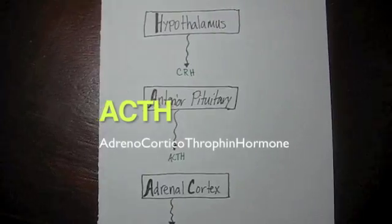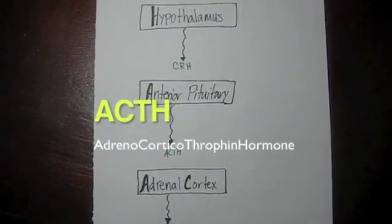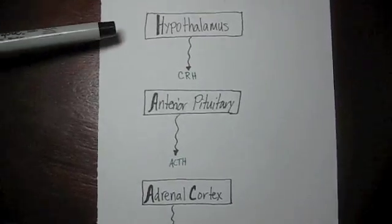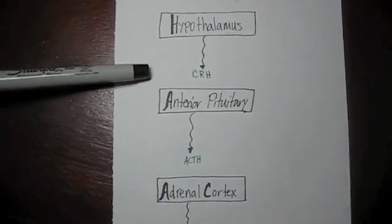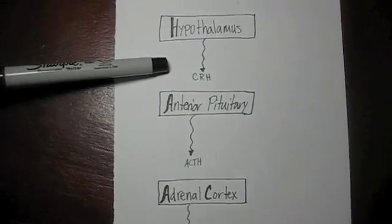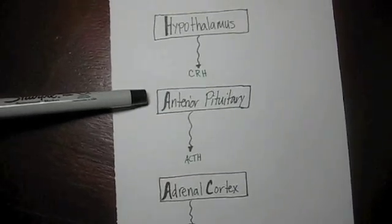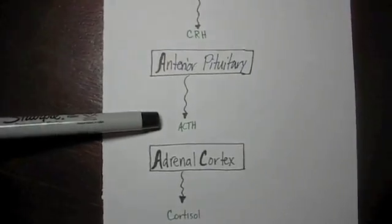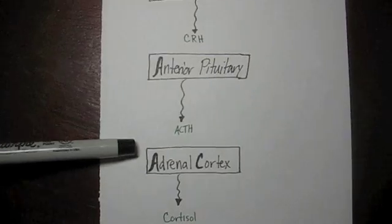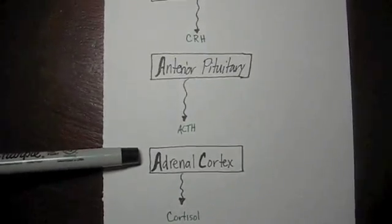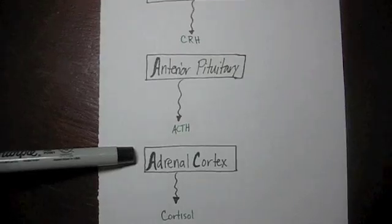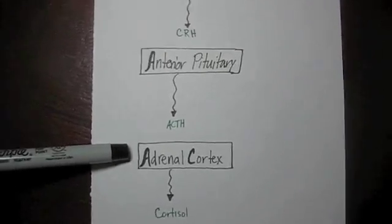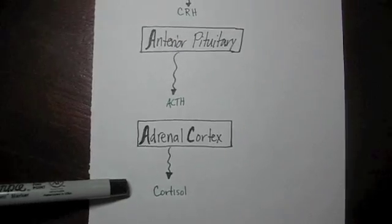The first hormone we will talk about is ACTH. The hypothalamus releases CRH, which stimulates the anterior pituitary to release ACTH, which will stimulate the target organ — in this case, the adrenal cortex — which will then release the hormone cortisol.